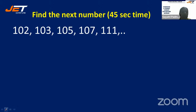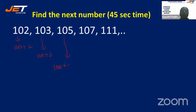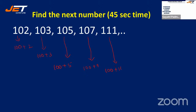So, 102 is 100+2, 103 is 100+3, 105 is 100+5, 107 is 100+7, 111 is 100+11. Each term adds 100 to a prime number. The primes are 2, 3, 5, 7, 11, so the next prime is 13. Your next number would be 100+13, which is 113.